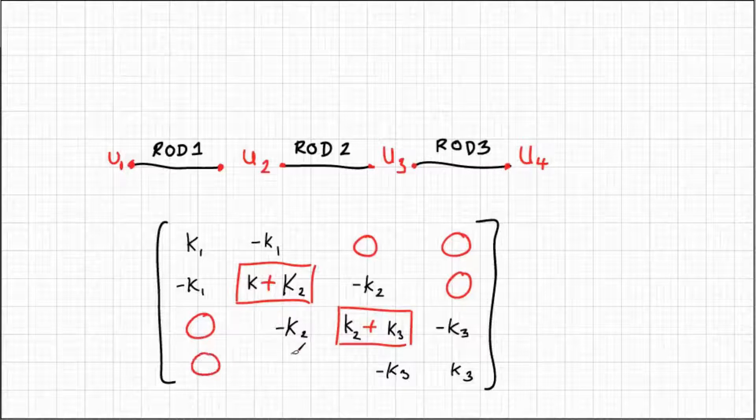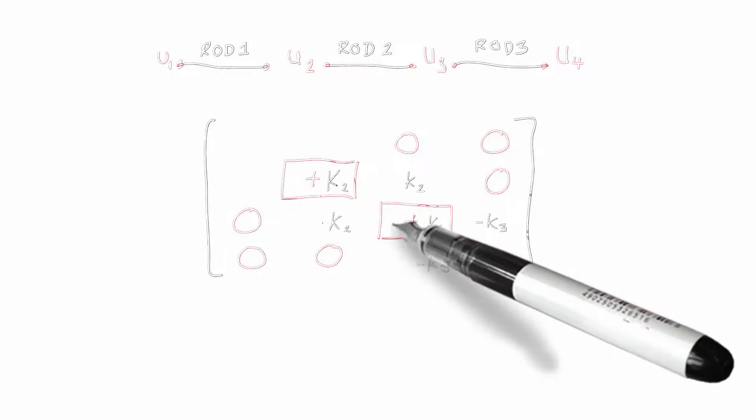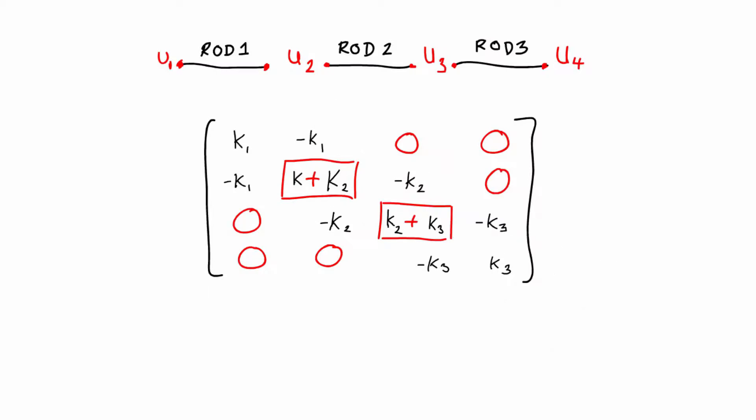That gives us the full assembled stiffness matrix. Now we can recap on the component stiffness matrix. u2 and u3 are where there's connectivity existing between their respective elements. If the connectivity didn't exist, the model would be broken.